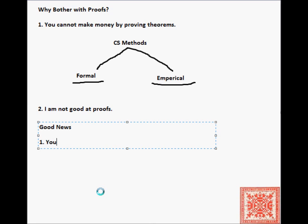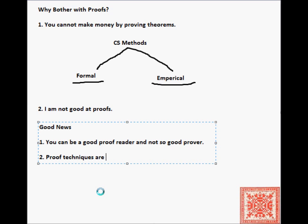So, what's the good news? Well, the first piece of good news is that as a student of computer science, you can become good at reading and understanding proofs without necessarily becoming good at proving things. So, you can be a good proof reader and not so good a theorem prover. And it is quite true, because the standards in many branches of computer science are not quite as strict as in mathematics.